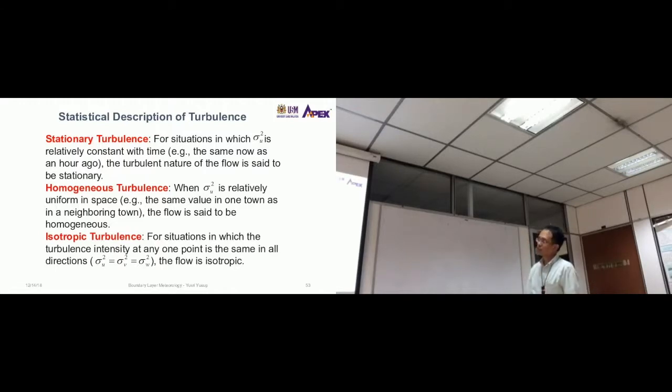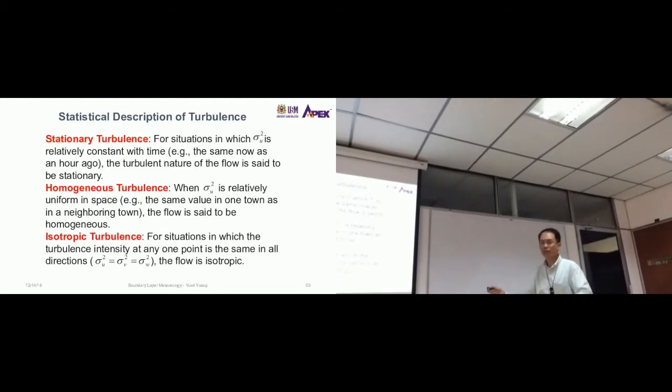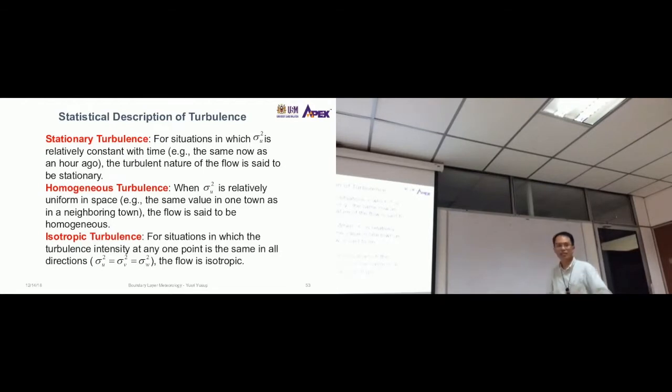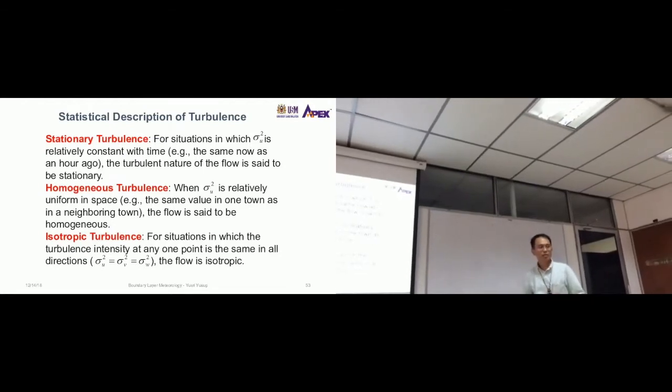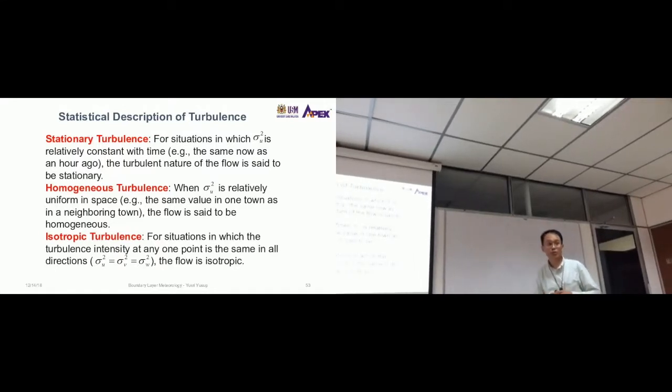Then isotropic turbulence for situations in which the turbulence intensity at any point is the same in all directions. Now, this sigma u here doesn't mean it has to be sigma u. It can also be for sigma v, sigma w. This is just an example. For isotropic, it means that the longitudinal turbulence is the same as the vertical turbulence is the same as the lateral turbulence. When the turbulence magnitude is the same, then it can be considered as isotropic turbulence.